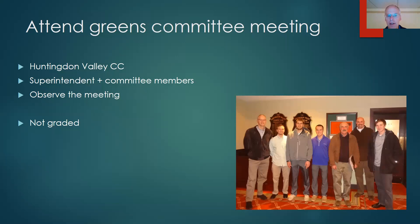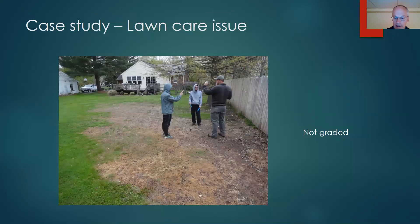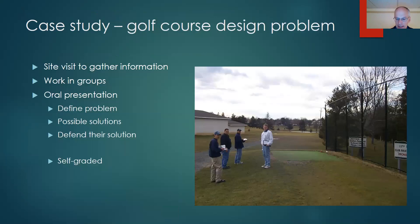Attending a greens committee meeting was another lecture class field trip — we had to go in the evening and sit in on the golf course's greens committee meeting, a committee of about five members that oversees course maintenance. I didn't grade it. Measuring putting green speed is something we talk about a lot in class, and it's best to have them go out and do it. I also took students to a friend's lawn nearby in Doylestown that was having all kinds of problems — we had to go out and diagnose it. I didn't grade that one either.